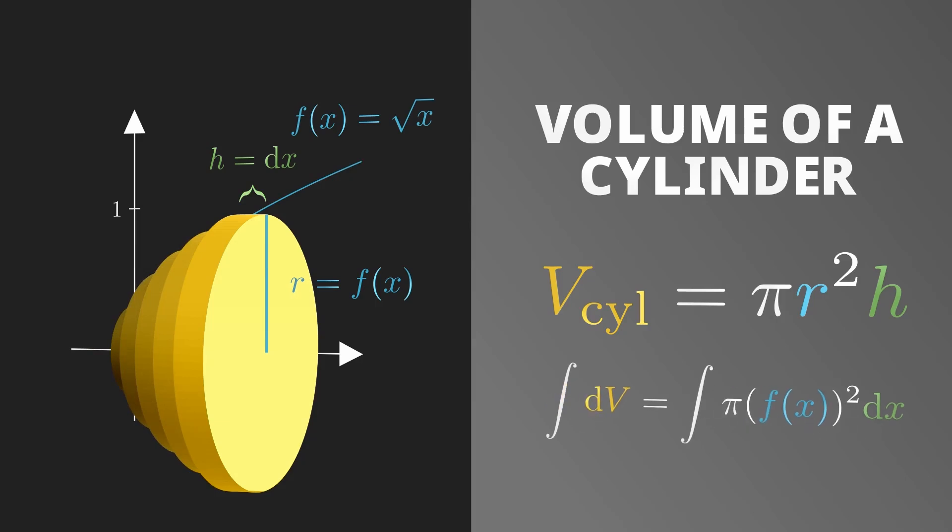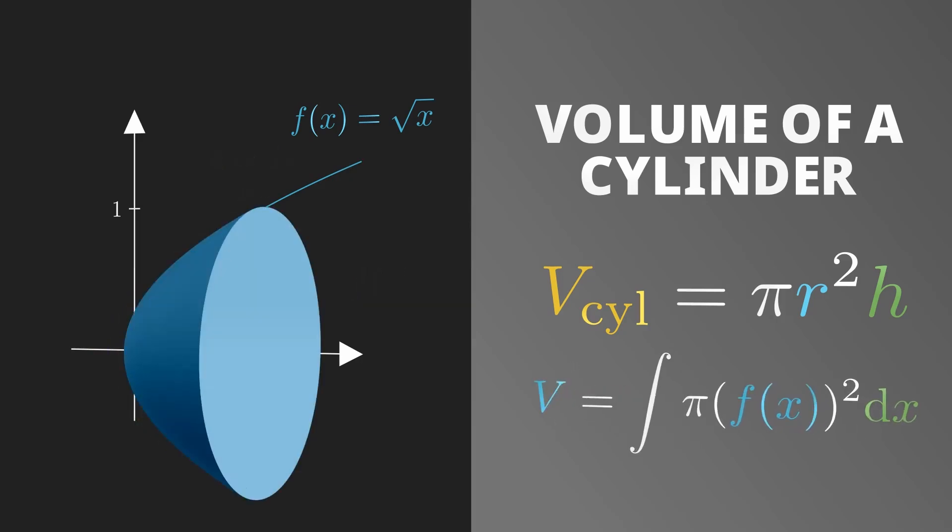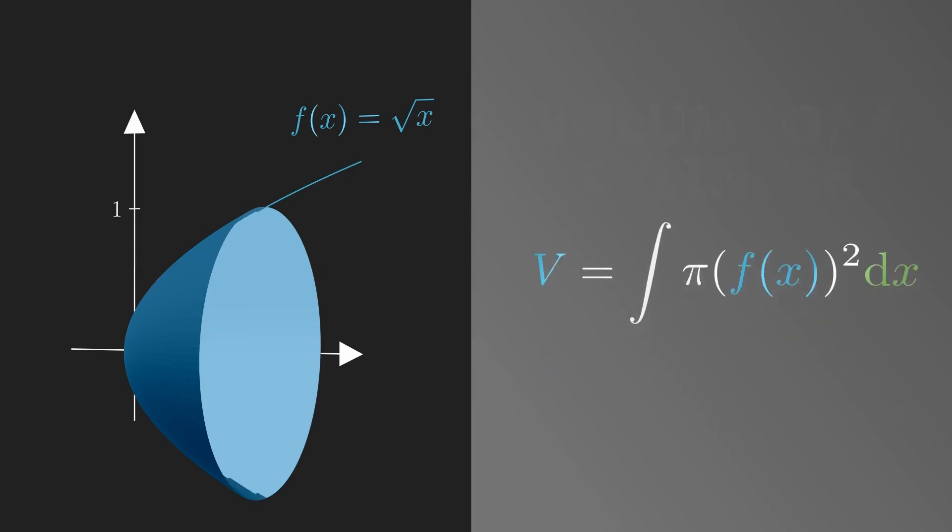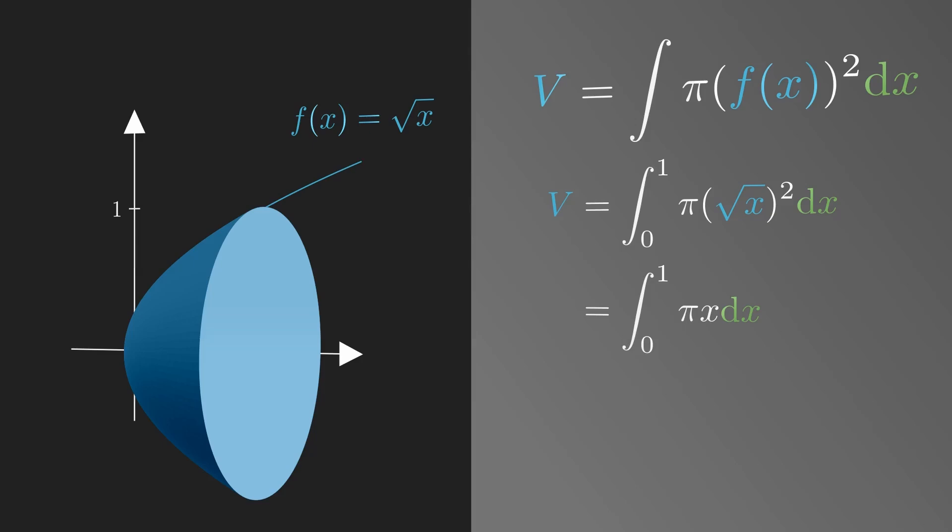We can integrate both sides to get the total volume of this solid, and now all we have to do is use this formula to solve the volume of this solid, plugging in f of x equals root x, and solving this definite integral to get pi over 2 as the volume.